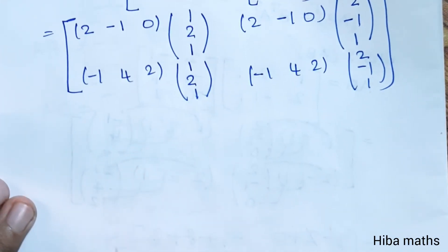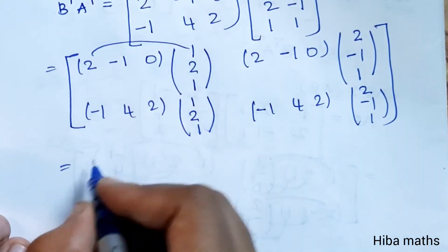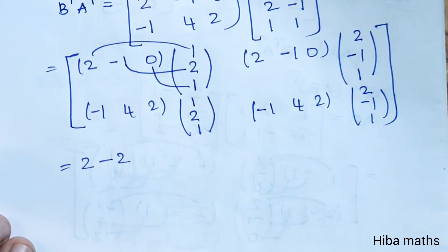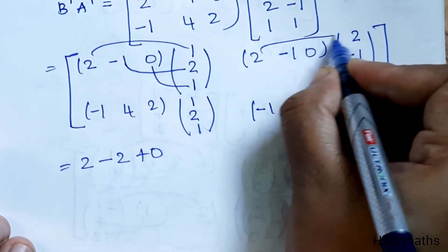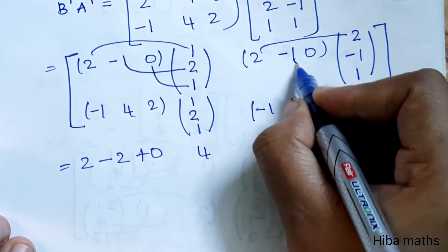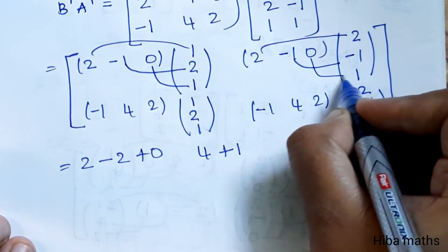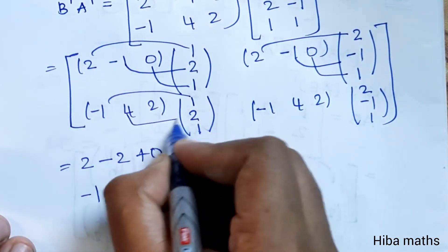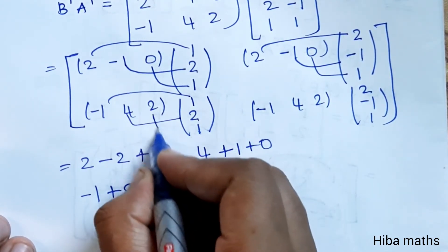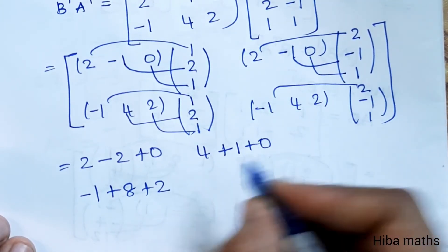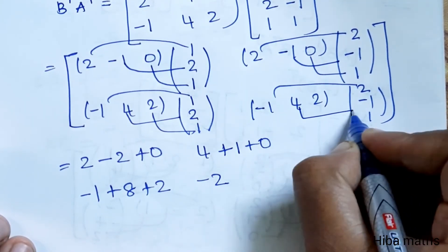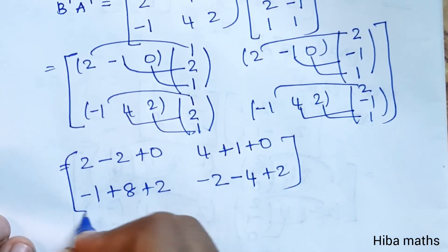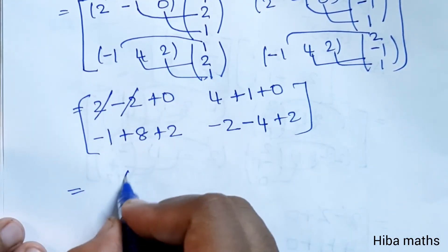Now multiplying inside: 2 ones are 2, minus 1 into 2 is minus 2, 0 into 1 is 0. Then 2 twos are 4, minus 1 into minus 1 is plus 1, 0 into 1 is 0. Minus 1 into 1 is minus 1. 4 into 2 is 2, 1s are 2. 2 ones are 2, minus 1 into 2 is minus 2. 4 into minus 1 is minus 4. 2 ones are 2. Plus 2 minus 2 cancel.